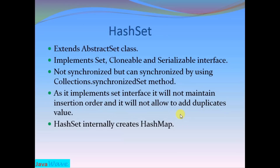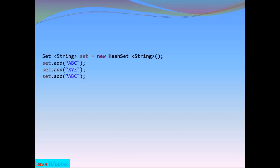HashSet will not allow duplicate values. HashSet internally creates a HashMap. In my last tutorial I covered how HashMap works internally, so I suggest please check that video — I have already given the link in the description.